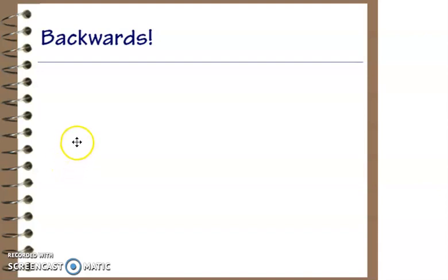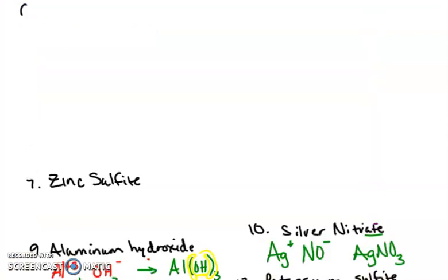Hi everybody, this is Mrs. Ellsworth. What we're going to be doing is we're going to be going backwards. So before I would give you some names and you would tell me what the formula is, like silver nitrate, and you would come up with the silver ion, the nitrate ion, and then you would do the switcheroo and bippity boppity boo it looks great.